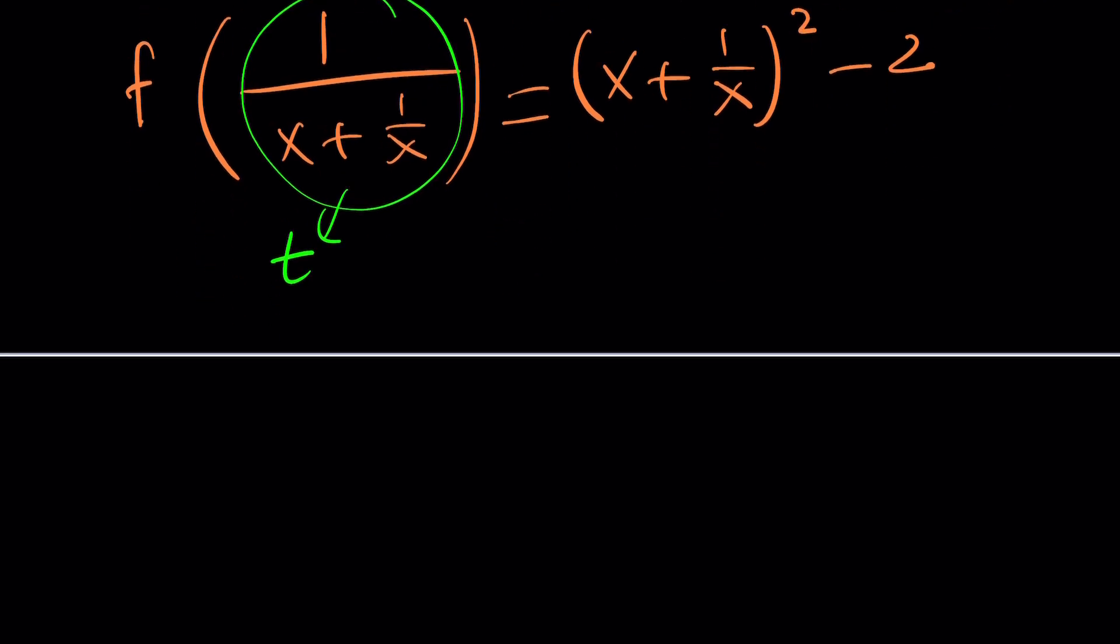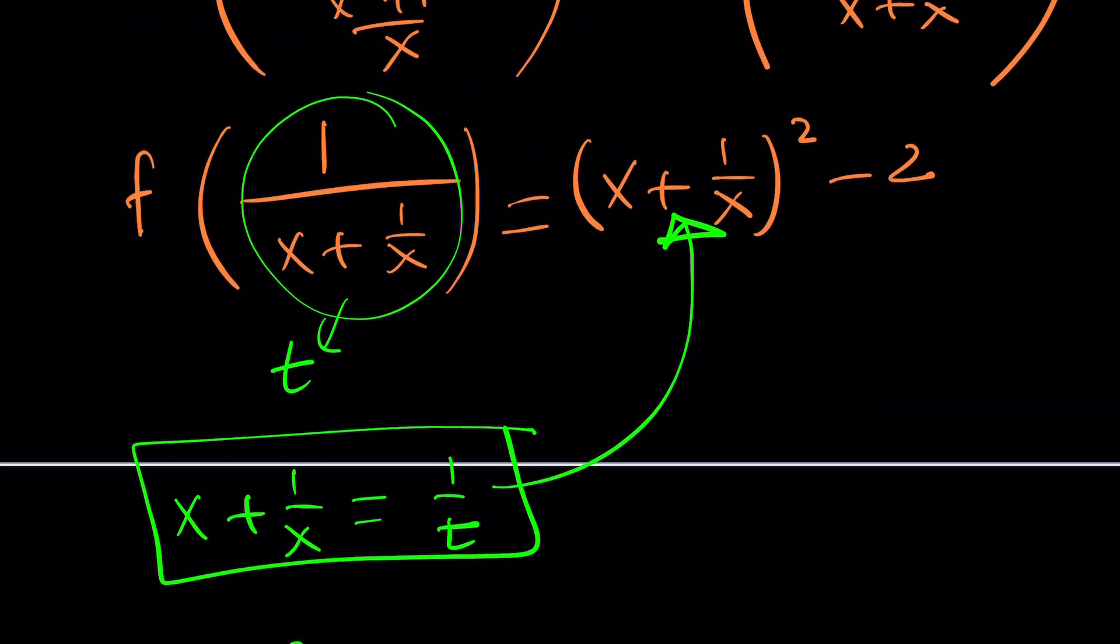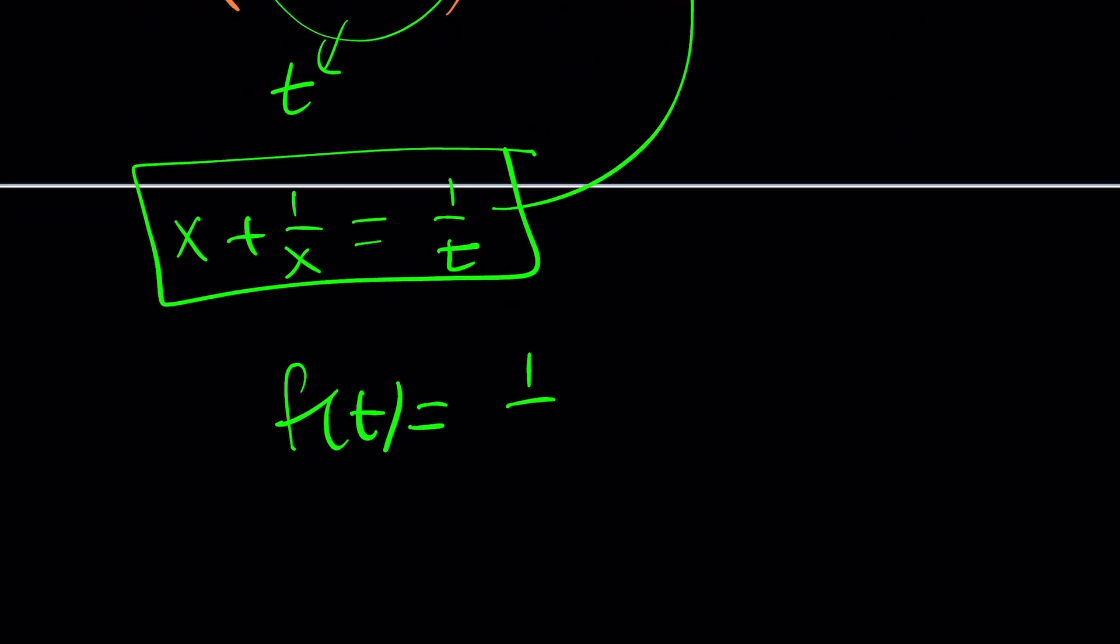But this time, it's a lot easier because from here, we get x plus 1 over x equals 1 over t, the reciprocal. And now, this is something we can substitute here. So we're going to get f of t equals 1 over t squared minus 2.